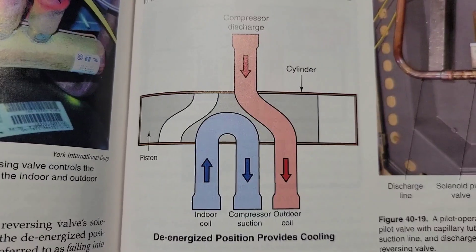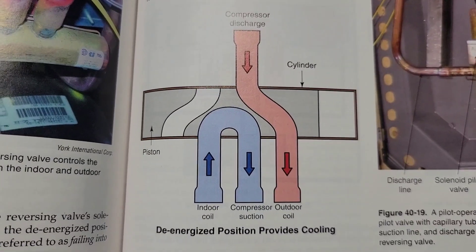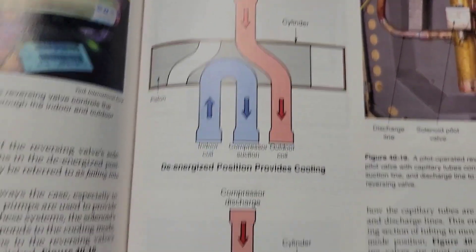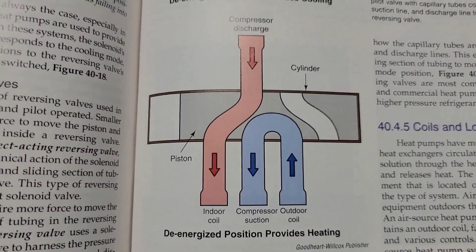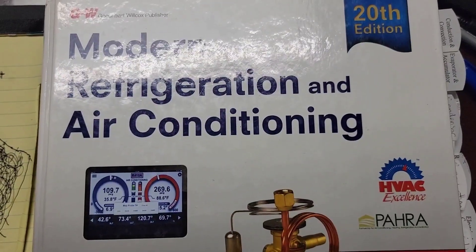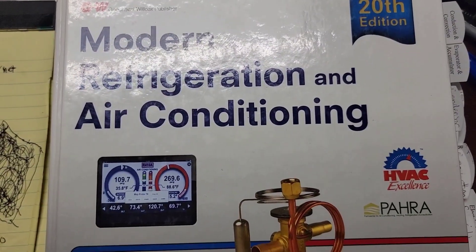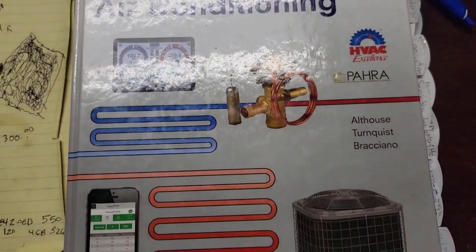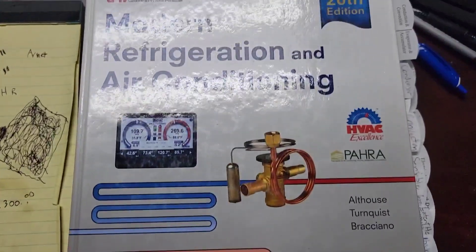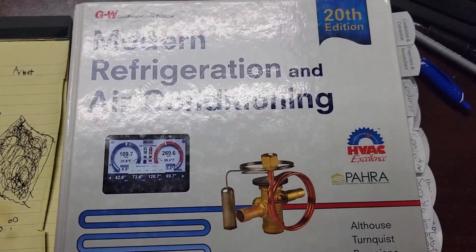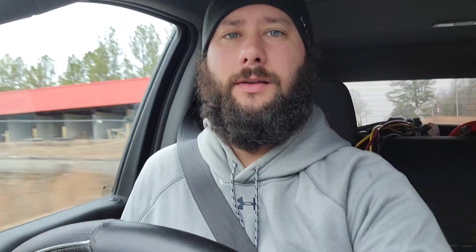This shows the reversing valve in the heating mode and then in the cooling mode. Take a moment and pause the video. If you'd like to know what book this is from, I'll show you — it's called Modern Refrigeration and Air Conditioning. If you want this book, go to the link in the description.